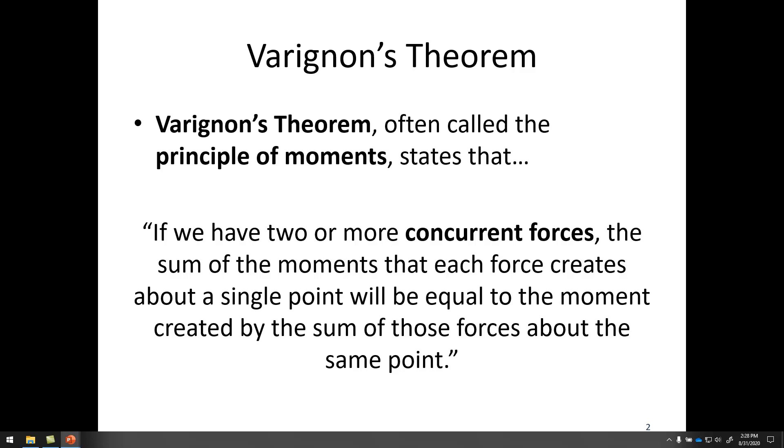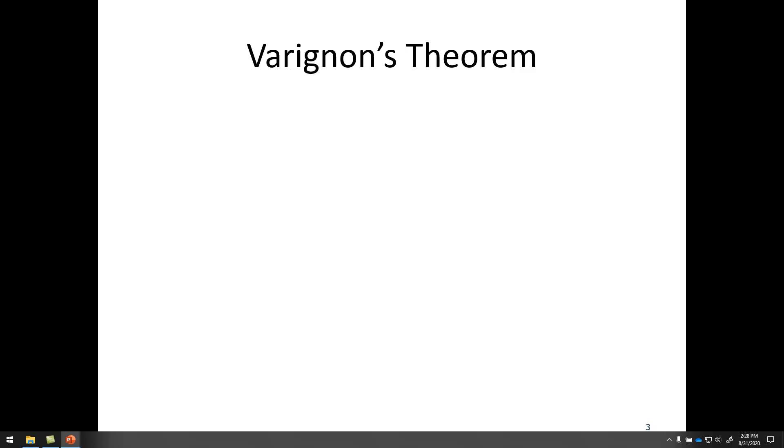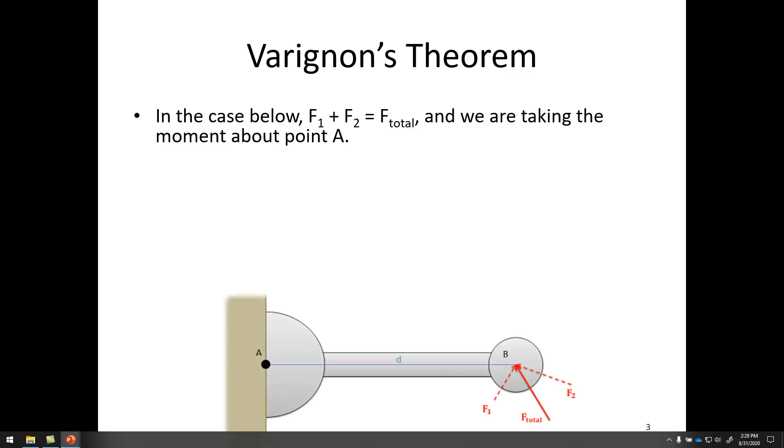So let's break that down and talk about what that means. In the case below we have F1 and F2 and they sum up to be F total and we're taking the moment about point A. So we've got our same lever that we've been dealing with in the past. I've got two forces F1 and F2 and if I were to add them up they add up to F total.